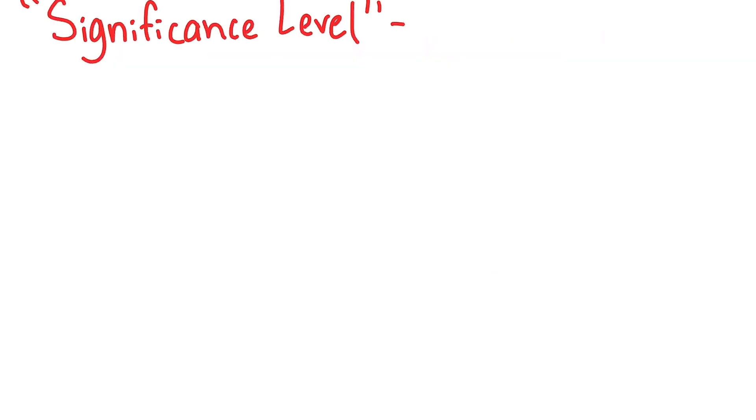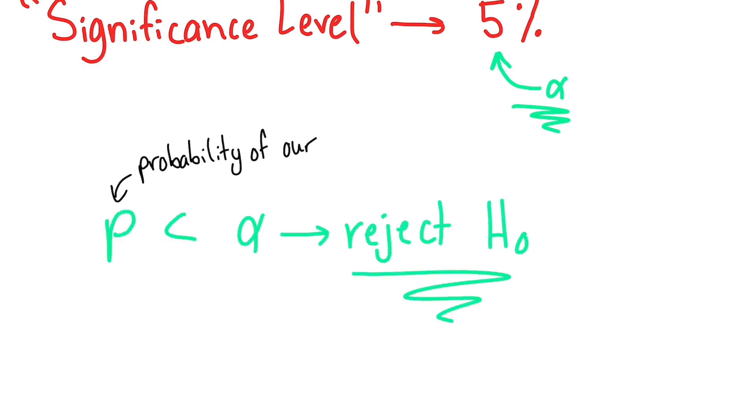Typically, we use 5% and denote it with the parameter alpha, or the significance level. If the likelihood of getting our outcome is less than 5%, then we can reject the null hypothesis.